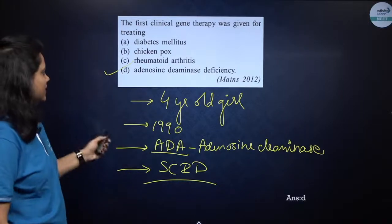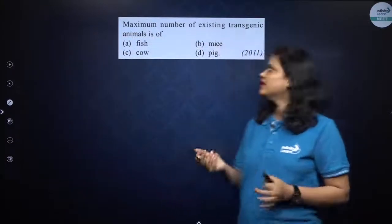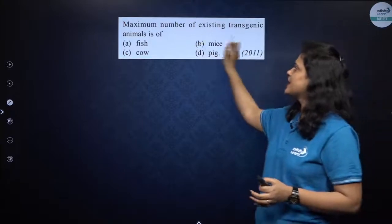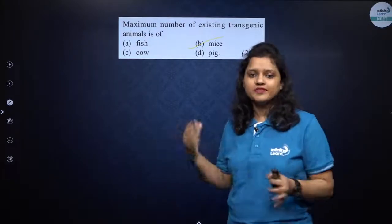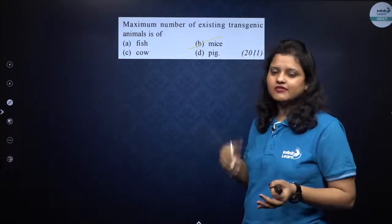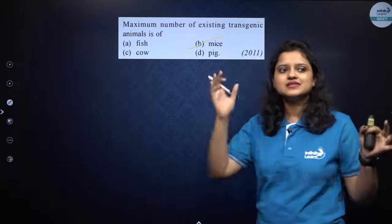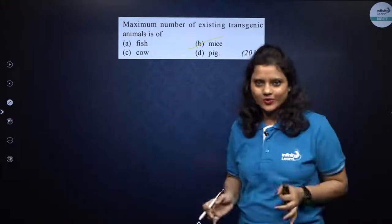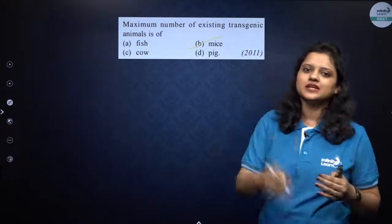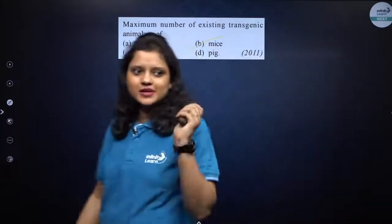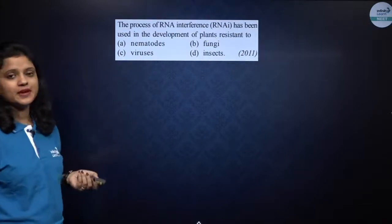Next: the maximum number of existing transgenic animals is of which type — fish, mice, cow, or pig? The correct option is mice. Mice are preferred for experimentation because their lifespan is short, so any changes can be observed quickly. About 95% of transgenic animals are mice because of their short lifespan.